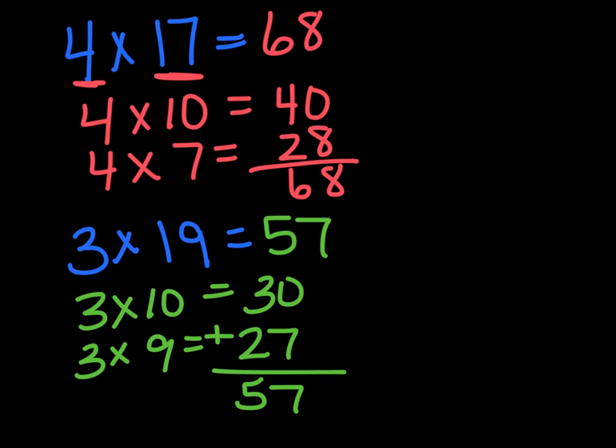Okay. Here are my answers. I'm going to walk you through them. I did four groups of 10. So I split that 17 into 10 and seven, four groups of 10 is 40, four groups of seven is 28, 40 plus 28 is 68. So four times 17 is 68. For three times 19, I split 19 into 10 and nine and I got three groups of 10 is 30 and three groups of nine is 27. I added those together and I got 57.